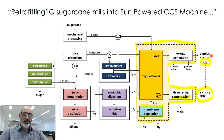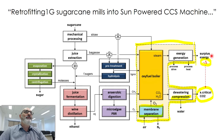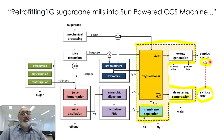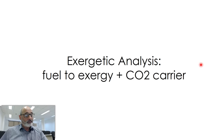Because if the surplus is negative, that means you have to import energy — exergy, to be more precise — from the grid, and this is not viable. The idea is to show you that this is possible. Let's move on.